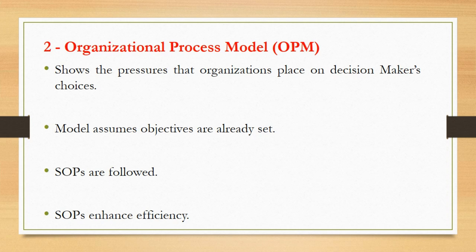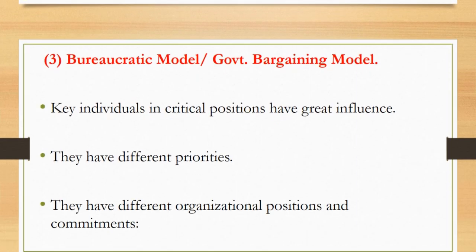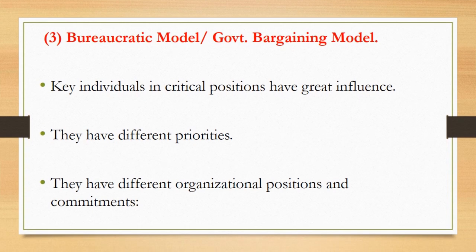The second model of foreign policy decision-making presented by Graham Allison is the Organizational Process Model. This model shows the pressures that organizations place on decision-makers' choices. It assumes objectives are already set and that standard operating procedures, or SOPs, are followed. These SOPs enhance efficiency.